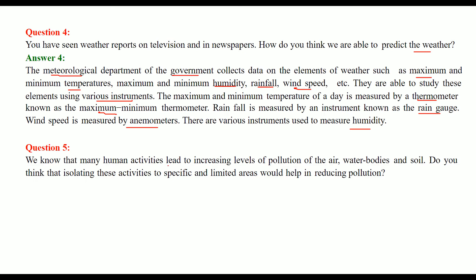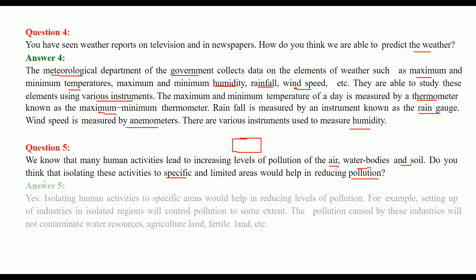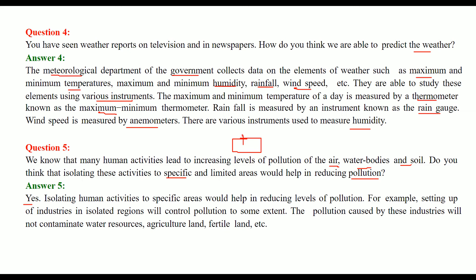Many human activities lead to increasing levels of pollution of air, water bodies, and soil. Would isolating these activities to a specific constrained area help reduce pollution? The answer is partially yes and partially no. If an industry is located far — say 100 kilometers away — the effect will be less, though still present. Isolating activities, such as setting up industries in isolated regions, will control pollution to some extent.